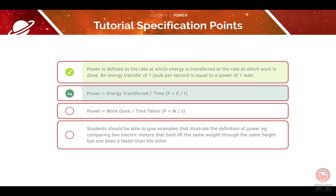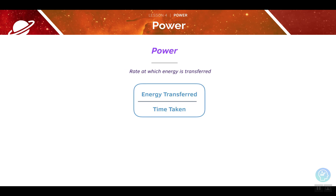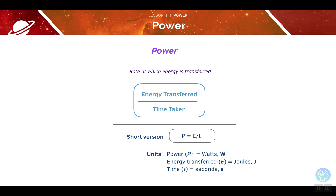Next we will look at calculating power using energy transferred. We can calculate the amount of energy that is stored in or released from a system using this equation. Power is the rate at which energy is transferred, which means we can calculate it as the energy transferred divided by the time taken. The short version of the equation is shown here. It is important you know what the symbols stand for, but it is fine to use it in an exam. The units for this equation are straightforward.